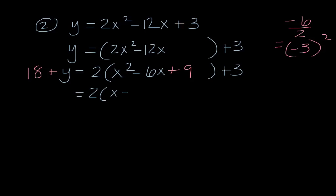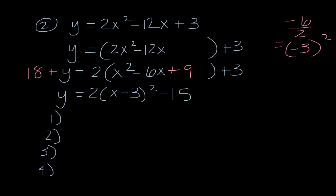Whenever I have a leading coefficient, I need to distribute to figure out what to add to the other side of the equation. When I factor the trinomial I get x minus 3 squared, and I subtract 18 from both sides, giving y equals 2 times the quantity x minus 3 squared minus 15. Finding the four characteristics: vertex is 3, negative 15; a value is 2, so it's going up and it's skinny; and line of symmetry is x equals 3.